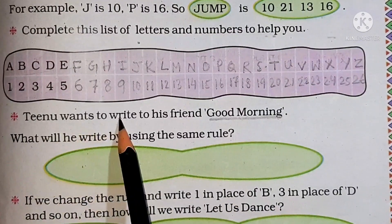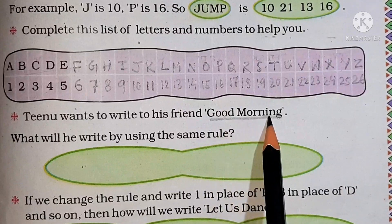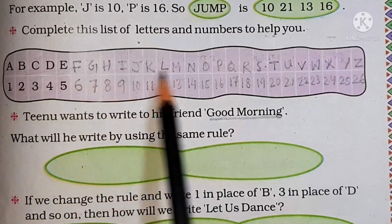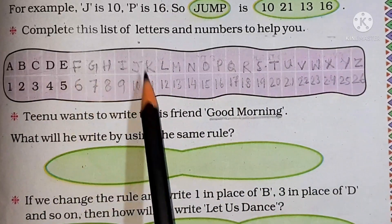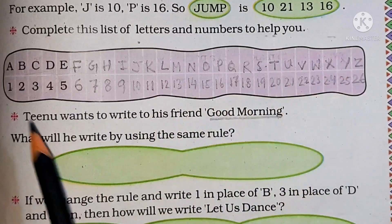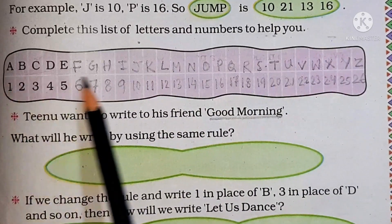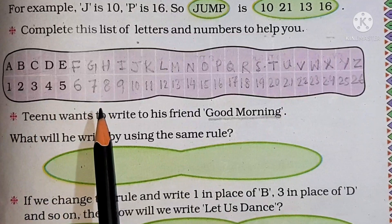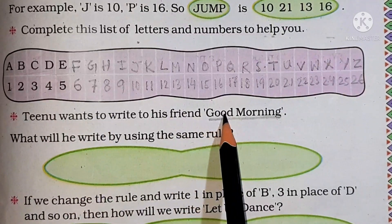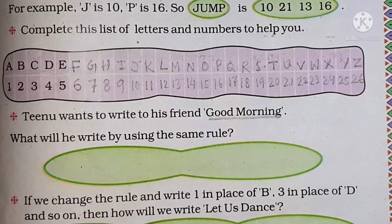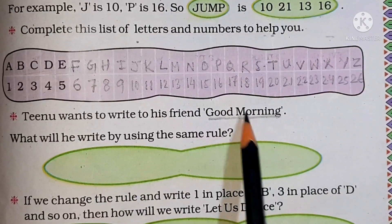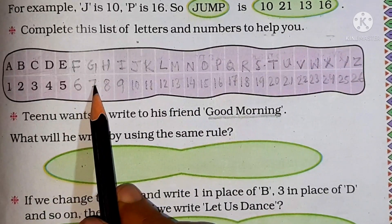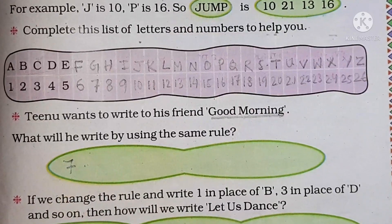Tinu wants to write to his friend: good morning. What will he write by using the same rule? Numbers and letters have been arranged. For each number, there is one letter. Using this rule, now we have to write good morning in that order. So for each letter, one number has been assigned. Let us write good morning using numbers. G — which number has been assigned for G? 7. So I will write here 7.